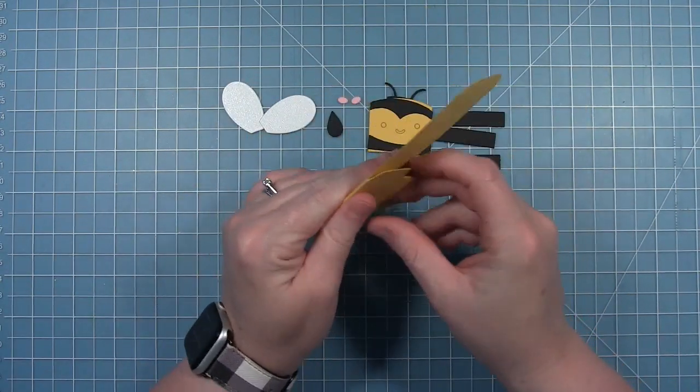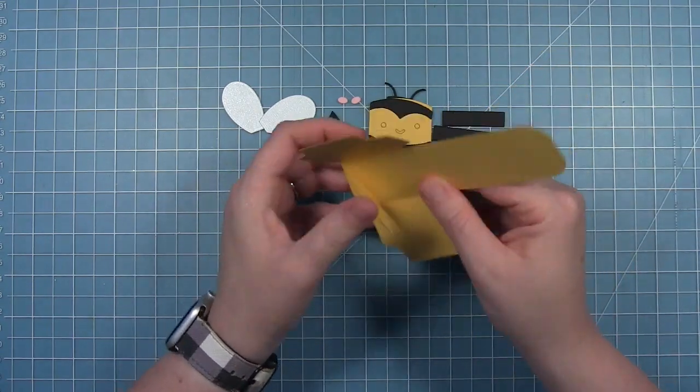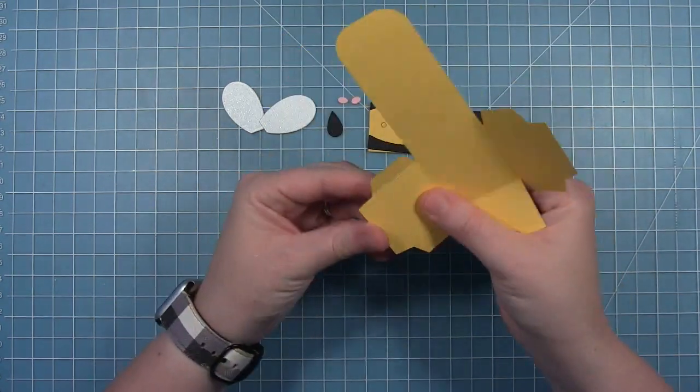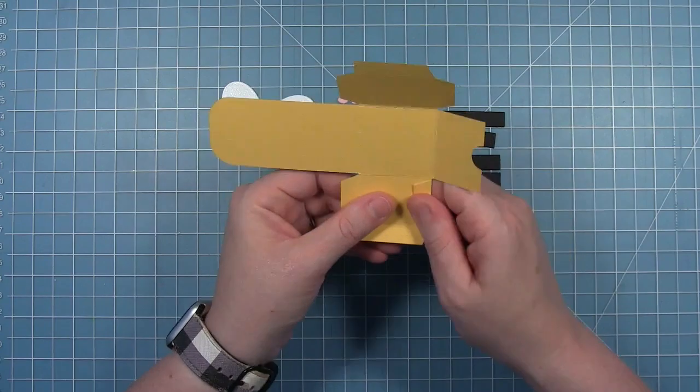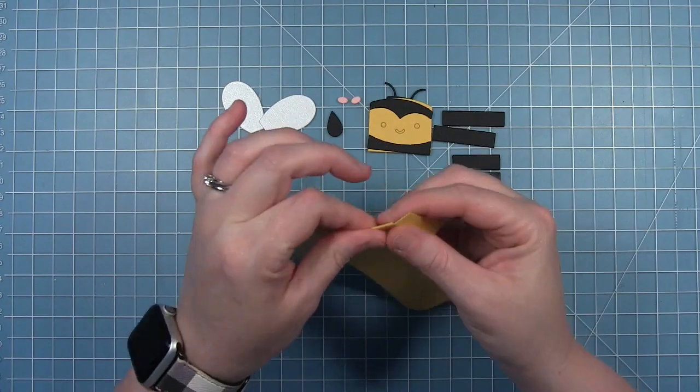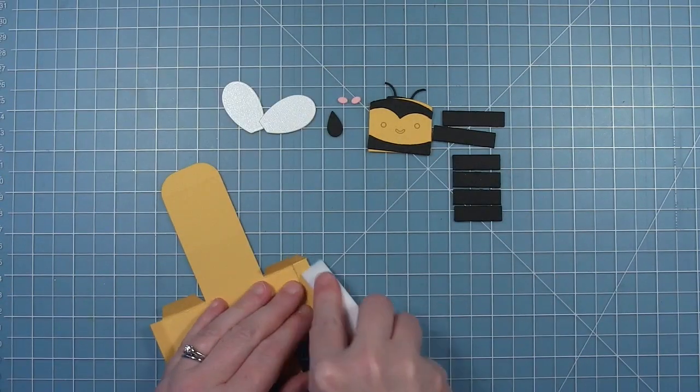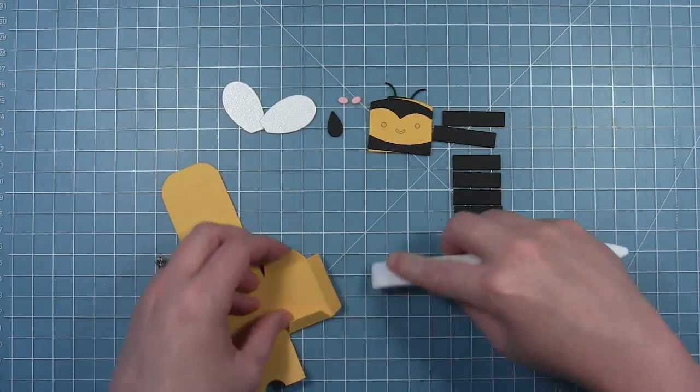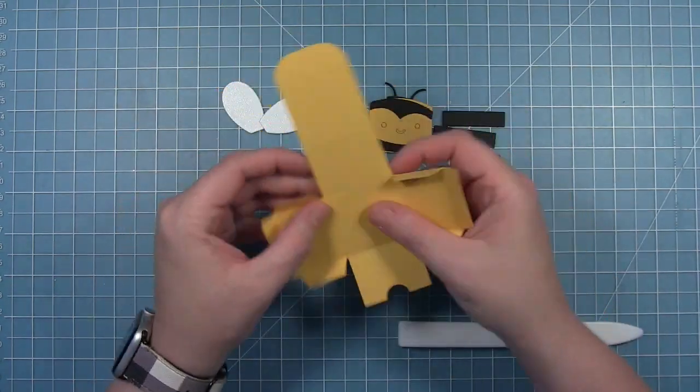So we're going to assemble our little box here. I've cut this box from some sunflower cardstock and I'm just folding along all the score lines that the die creates. I'm just making sure that those folds are nice and crisp.